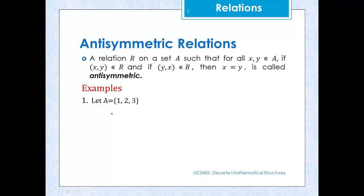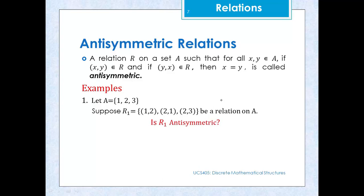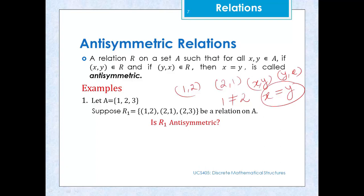Let's say we have a relation R1 defined as {(1,2), (2,1), (2,3)}. Is R1 antisymmetric? We can see that we have ordered pair (1,2) and also (2,1). Here (x,y) and (y,x) are both present, but in these two pairs 1 is not equal to 2. So we do not have x = y when both (x,y) and (y,x) are present, meaning it is not antisymmetric.